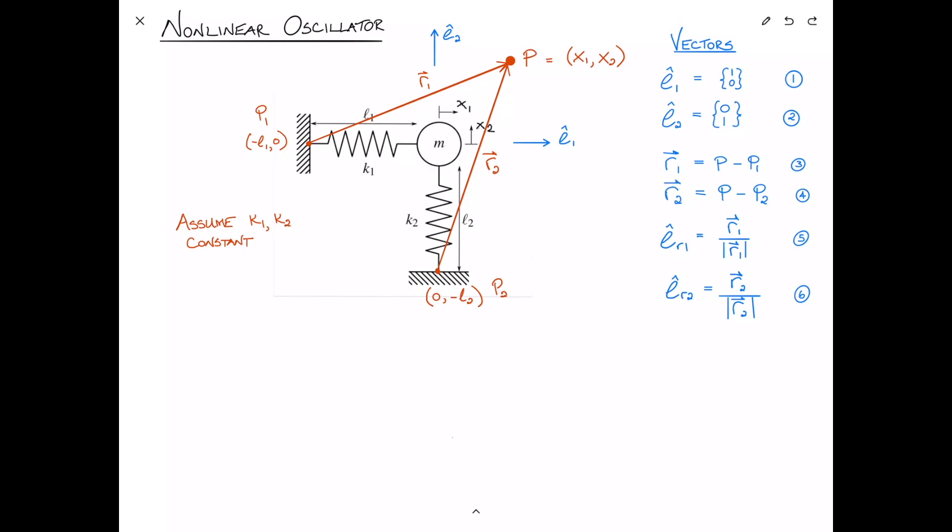I'll remind you that the magnitude of r1 is, and you can see this from the diagram, x1 plus l1 squared, that's this distance, plus x2 squared. So just using Pythagoras' theorem, it's the square root of that. And similarly for r2, x2 plus l2, that's that distance there squared, plus x1 squared, the square root of that is equal to the magnitude. We'll call these equations 7 and 8.